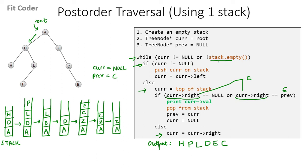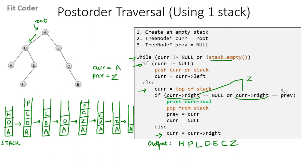In the next iteration, stack is not empty. `Current` is equal to top of stack, which is Z. Right of Z is C, and `previous` is also C, so this if condition is true. We print the value of `current`, which is Z. We pop from the stack. We set `previous` equal to `current`, and `current` equal to null. In the next iteration, stack is not empty. `Current` becomes equal to top of stack, which is A. Right of A is Z, and `previous` is equal to Z, so this is true. We print the value of `current`, which is A. We pop from the stack. We set `previous` equal to `current`, and `current` equal to null.